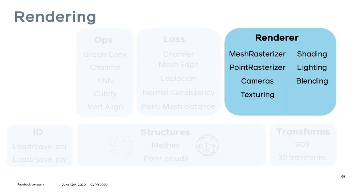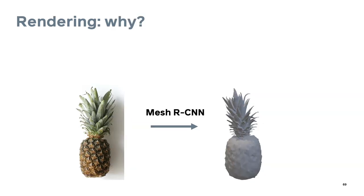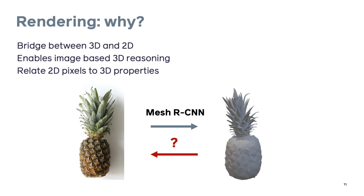Next I want to deep dive into rendering, and in particular differentiable rendering, and explain the design choices in PyTorch 3D. Going back to mesh RCNN — the input is an image and output is a mesh — but what about the reverse, going from mesh back to an image? Rendering is the process of generating a 2D image from a 3D model. Making this step differentiable enables us to bridge the gap between 3D and 2D, and enables image-based 3D reasoning by relating 2D pixels back to 3D properties.